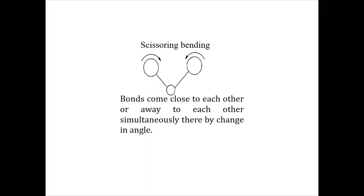In scissoring bending vibrations, bonds become close to each other or may go away from each other simultaneously, thereby changing the bond angle. You can observe from the center atom: if both atoms are coming nearer, the bond angle will definitely change. If they are going away from each other, the bond angle will also change. So in scissoring bending vibrations, the bond angle is changing.